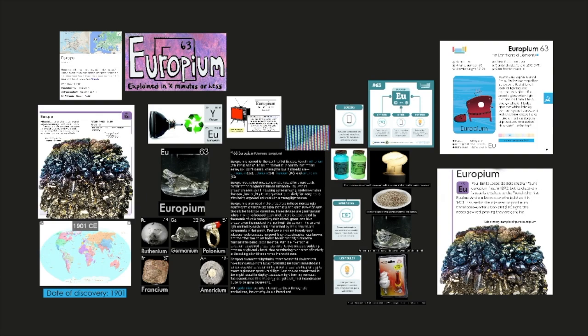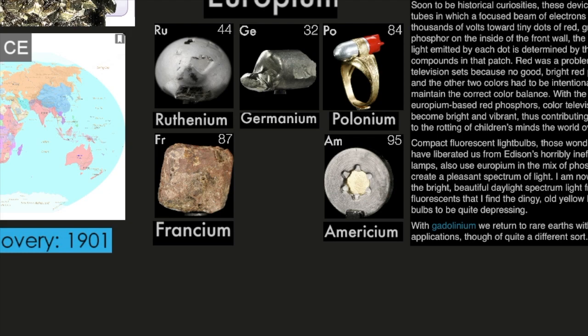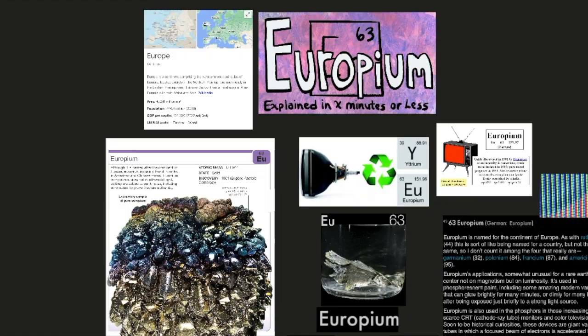Europium is named for the continent of Europe. According to the author, as with Ruthenium element number 44, this is sort of like being named for a country but not the same. So I don't count it among the four that really are: Germanium element number 32, Polonium element number 84, Francium element number 87, and Americium element number 95.